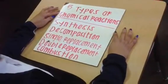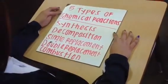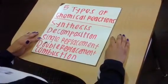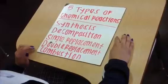So, to balance equations, there are five types of chemical reactions. There are synthesis, decomposition, single replacement, double replacement, and combustion.